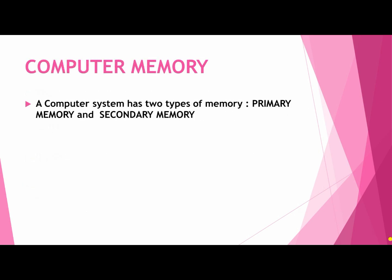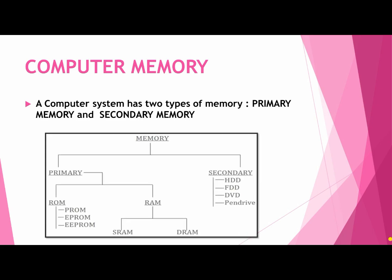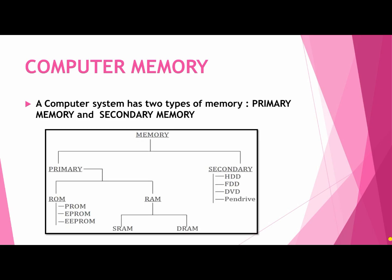Next is computer memory. A computer system has two types of memory: primary memory and secondary memory. As you can see, memory is divided into two parts — primary and secondary. Primary is further divided into ROM and RAM. Secondary memory is of many types like HDD, FDD, DVD, pen drive and so on.